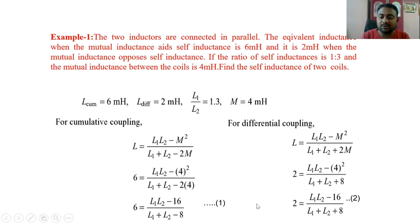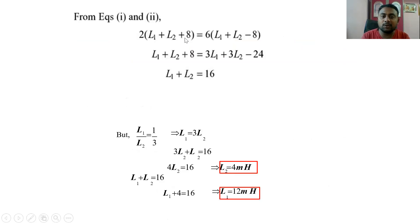From equation 1 and equation 2, the numerators are the same. So we equate both denominators. Sending the denominator to the other side, we get: 2 × (L1 + L2 + M) = 6 × (L1 + L2 − M). Solving this gives L1 + L2 = 16. Using the given ratio L1 to L2 = 1:3, we write L1 = 3·L2. Substituting into L1 + L2 = 16 gives 3L2 + L2 = 16, so L2 = 4 milli Henry.